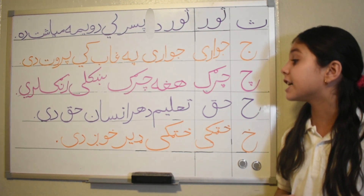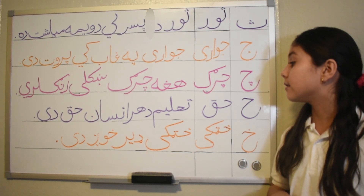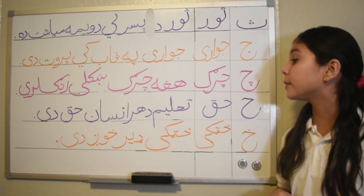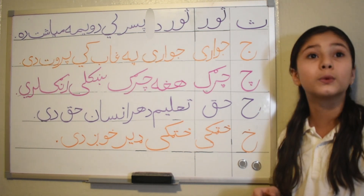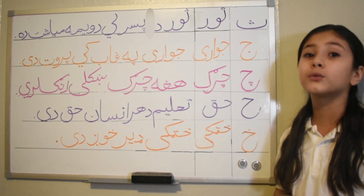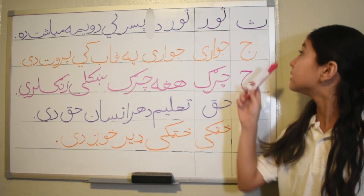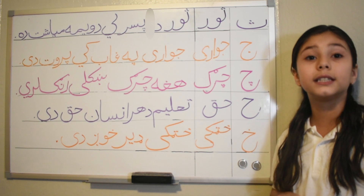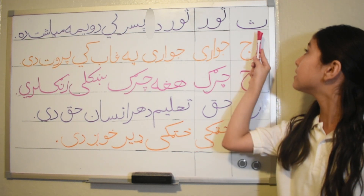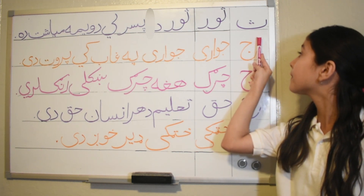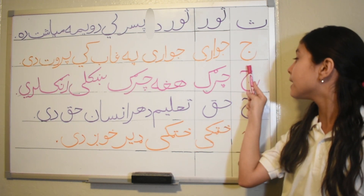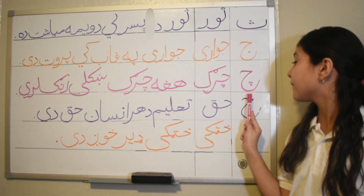The last one is 'Hatakai Der Horde,' and that translated is: a cantaloupe is very sweet. Now I'm going to say these letters again — this is Se, this is Jim, this is Che.